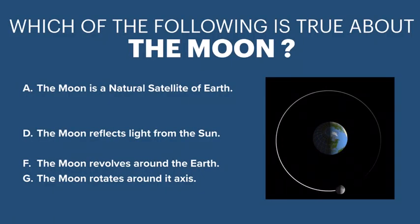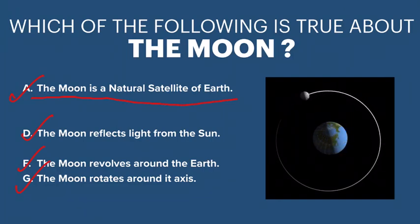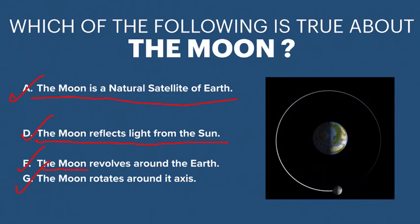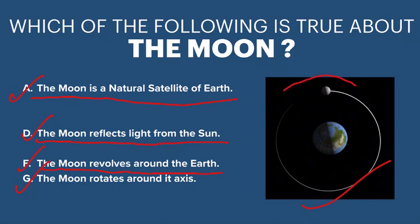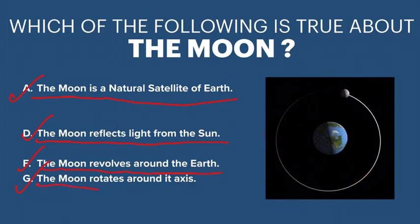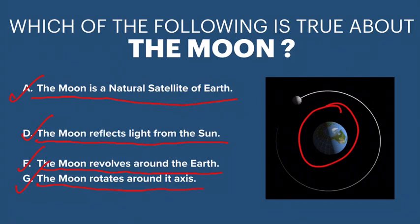The true statements are A, D, F, and G. Statement A: the moon is a natural satellite of Earth — it was formed naturally, not made by humans, so it is not an artificial satellite. Statement D: the moon reflects light from the sun — the moon does not have its own light; it reflects sunlight. Statement F: the moon revolves around the earth, as shown in the picture. Statement G: the moon rotates on its own axis, just as the earth rotates on its axis.